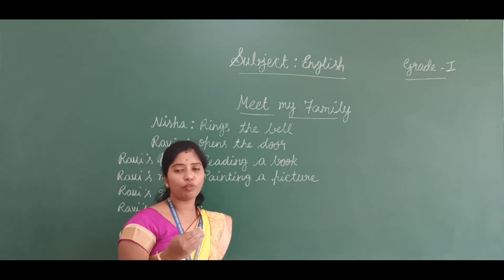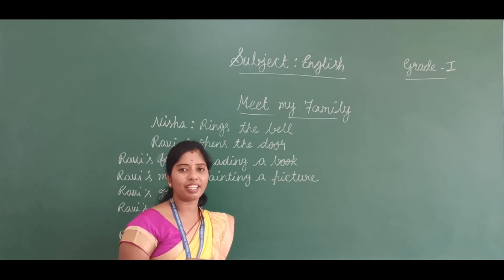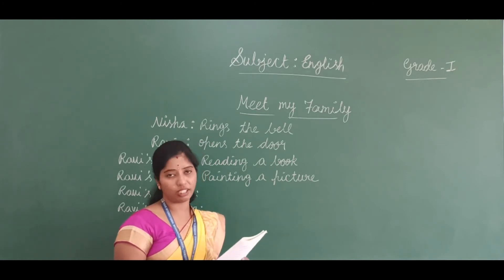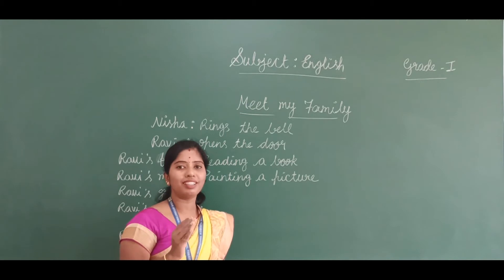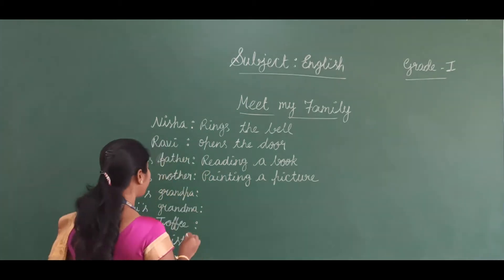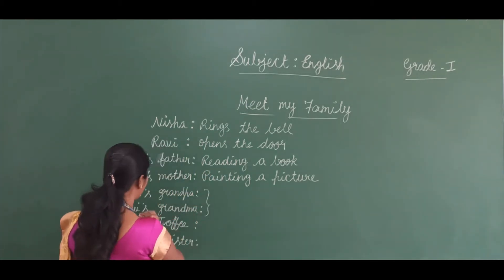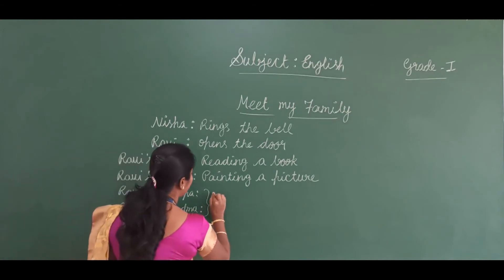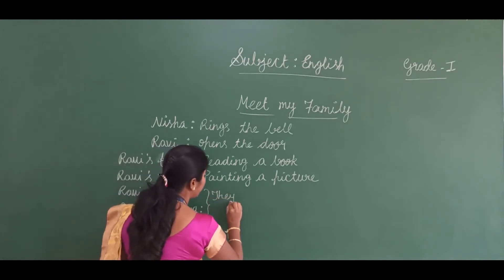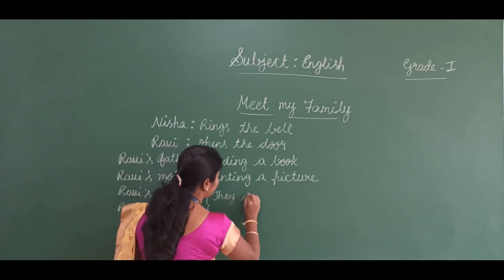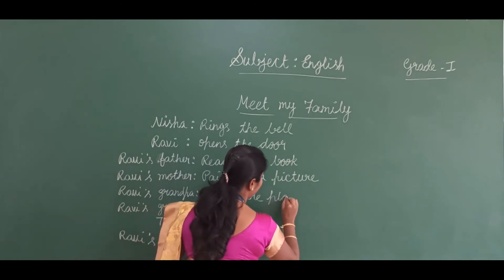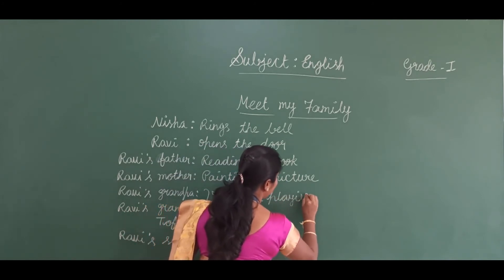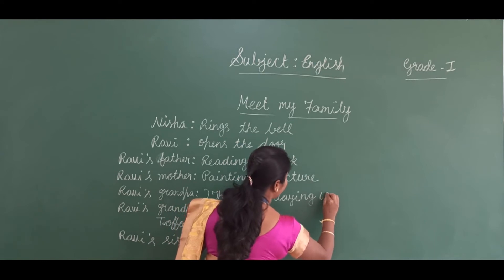Who is Toffee? Toffee is a cat — a pet animal of Ravi. Both Grandpa and Grandma are playing with the cat.